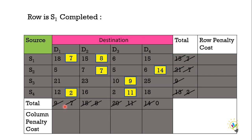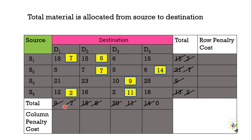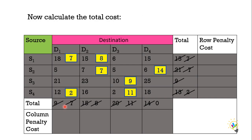Using Vogel's Approximation Method, I have transported total material from the available 4 sources to 4 destinations. I used 3 steps: first, calculate row penalty cost and column penalty cost; second, identify the largest penalty cost; third, identify the least cost in that penalty row or column. Use this cycle again and again to allocate all the material. Once done, we calculate the total cost.